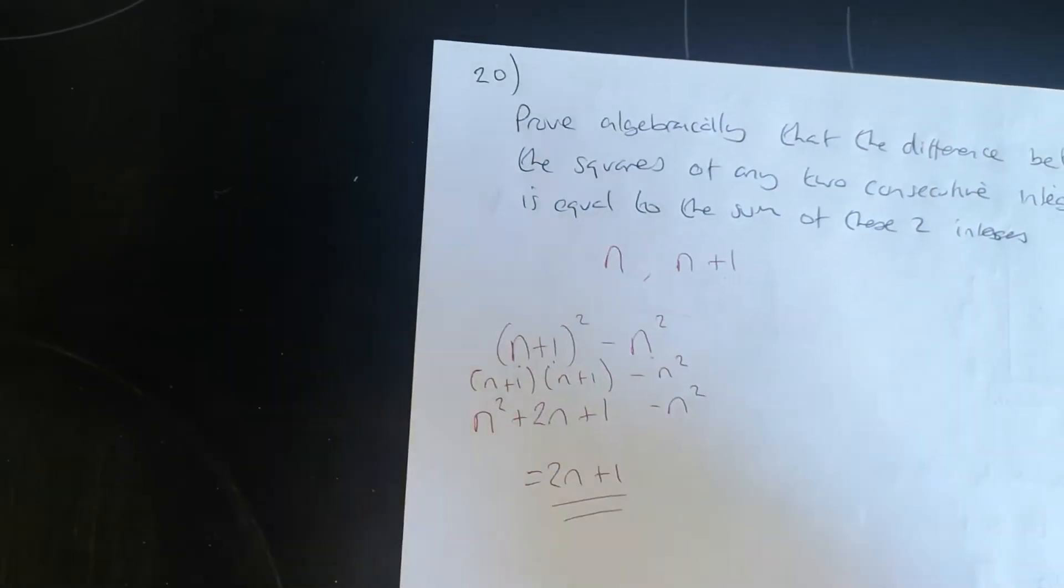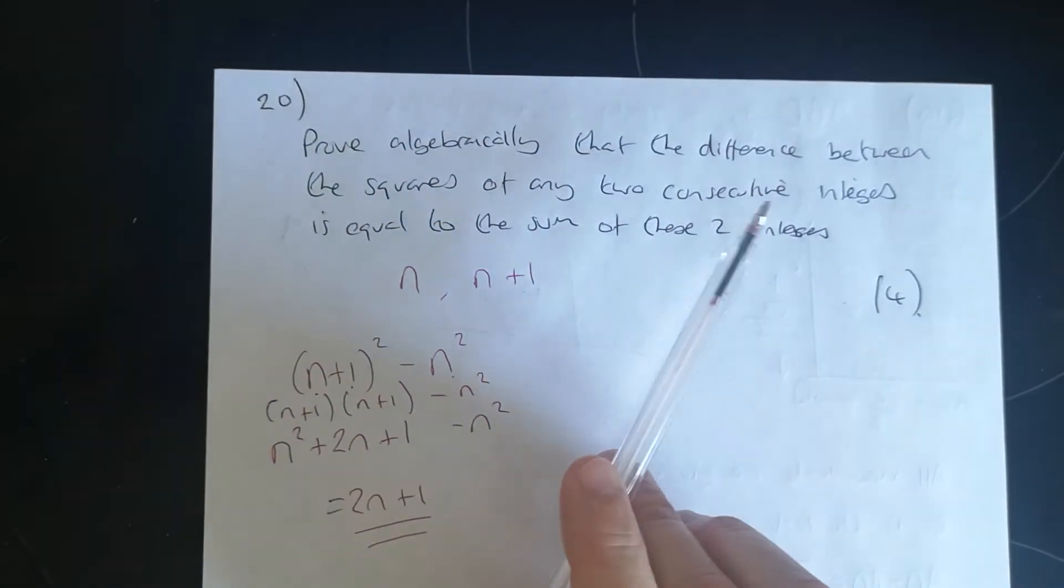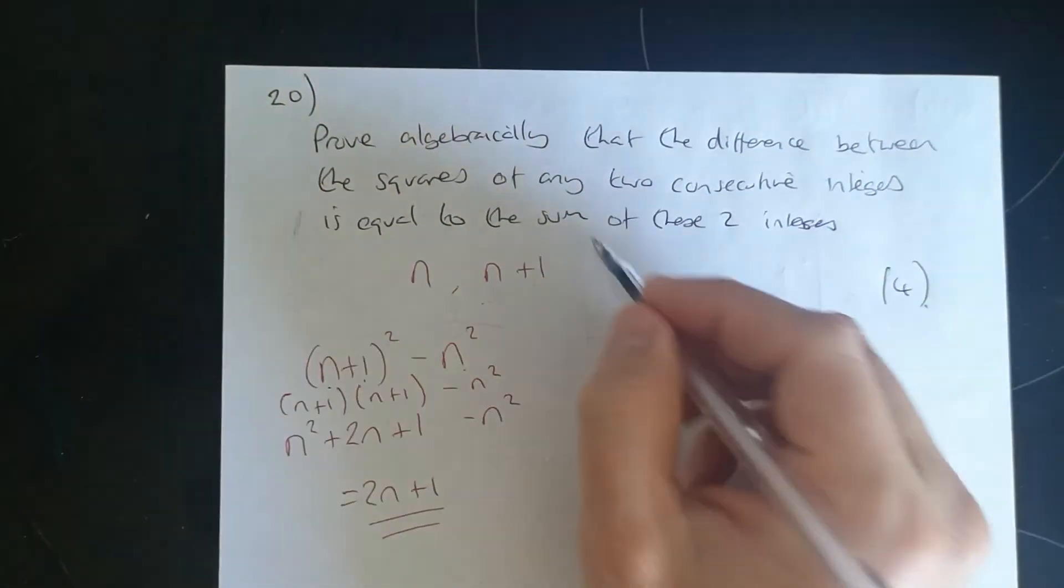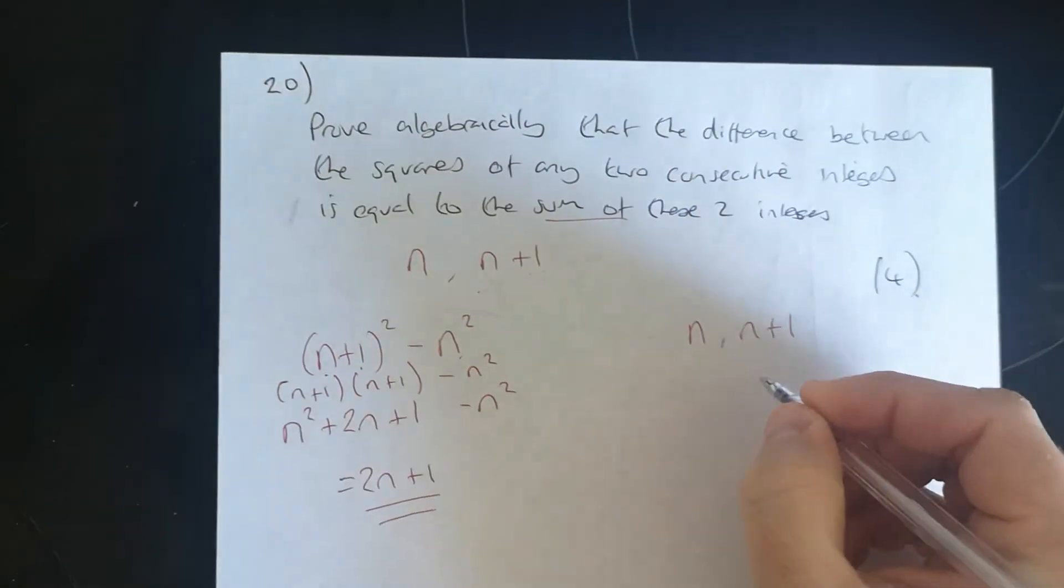So that's when you find the difference between the squares of the two consecutive integers. Then we need to think about the sum of these two integers. So we've got n and we've got n plus 1. If we were to add them,